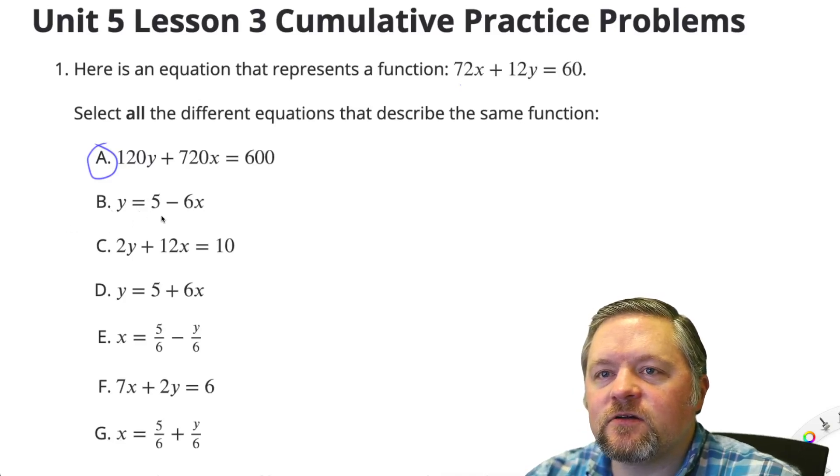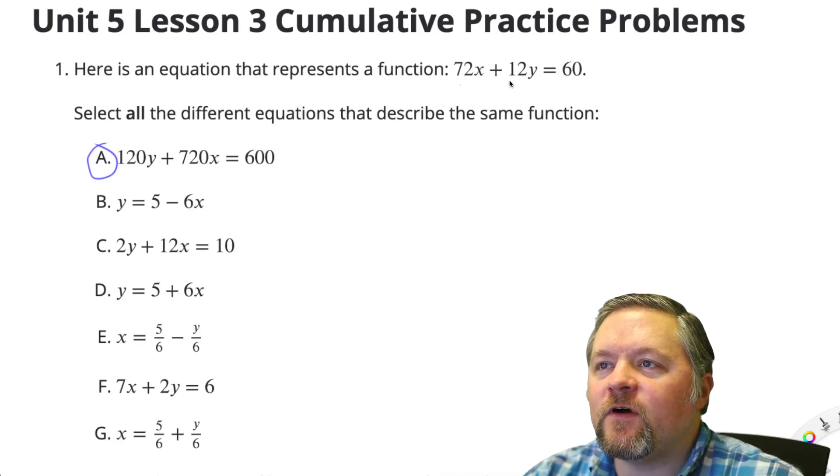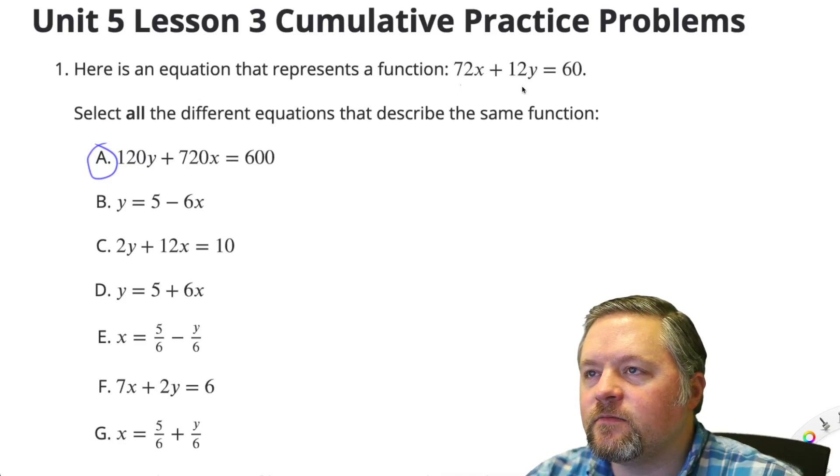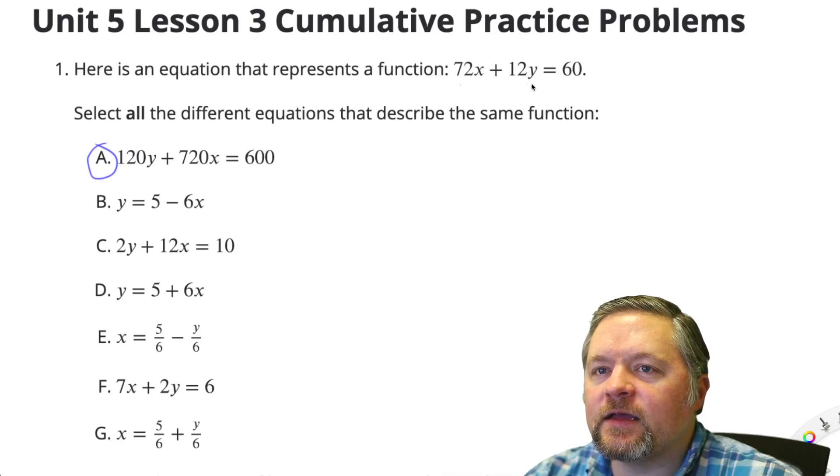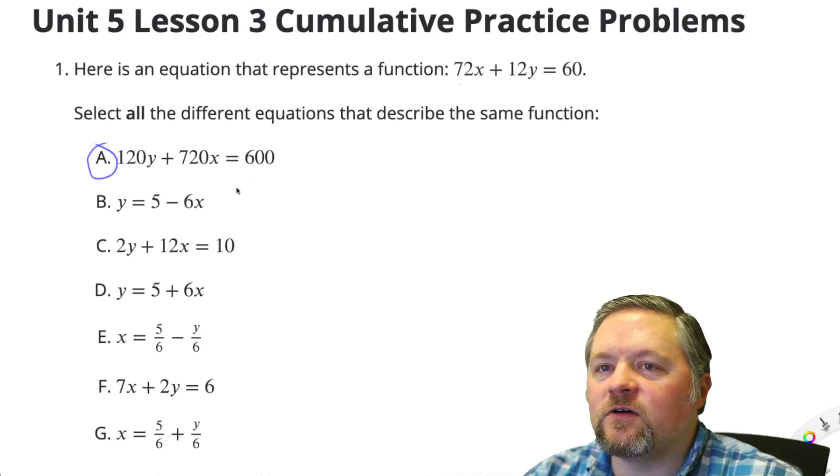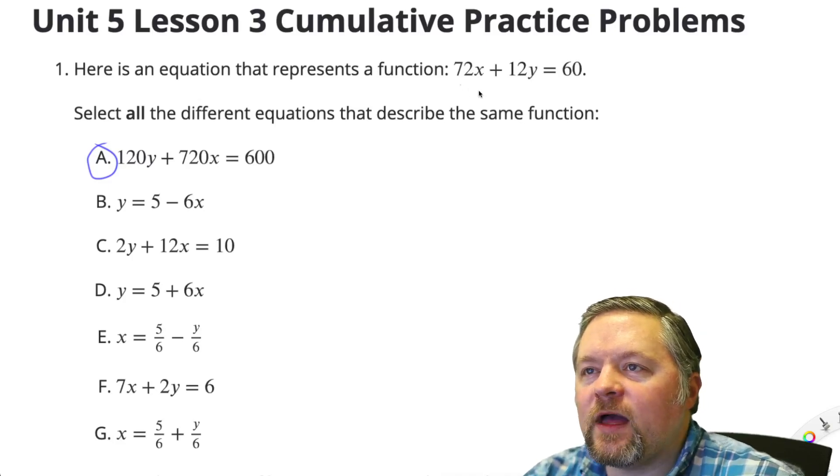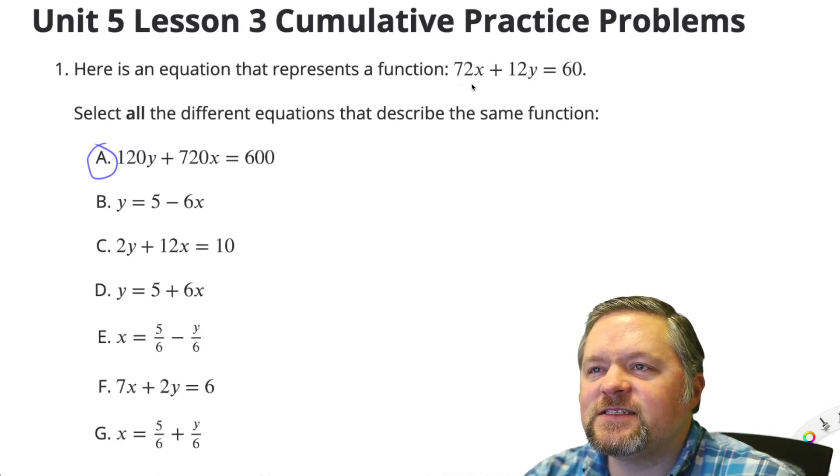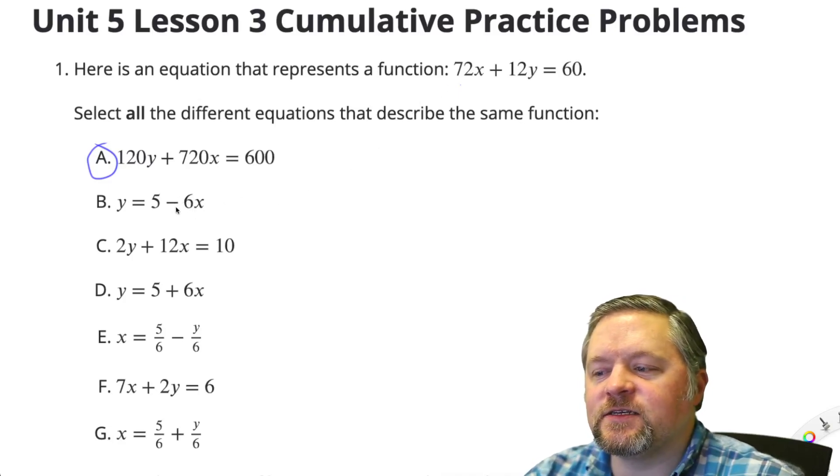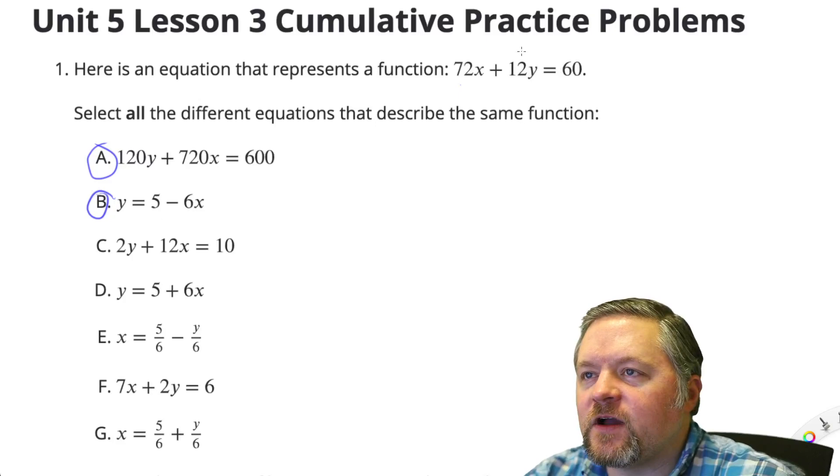So what is this one going to look like? How could we check this? Well, if we divide this by 12, 12y divided by 12 is y, 60 divided by 12 is 5, 72 divided by 12 is 6. That works because this 6x was on the other side. B is going to work. Divide each side by 12.